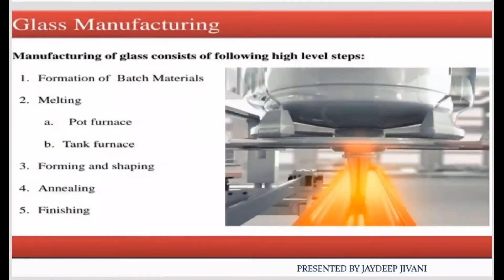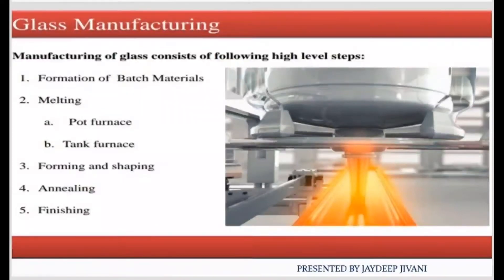The first step is forming of batch material. Batch material is the total raw material required for glass. This raw material will be mixed and converted into powder form, where the two parts will be mixed together as powder.